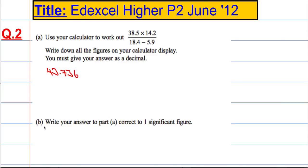Okay, part B. We're asked to write our answer to part A correct to one significant figure. So let's just write down what we had before, 43.736.